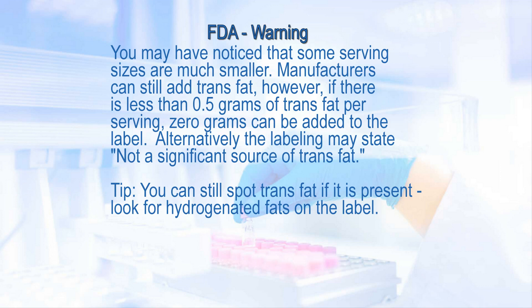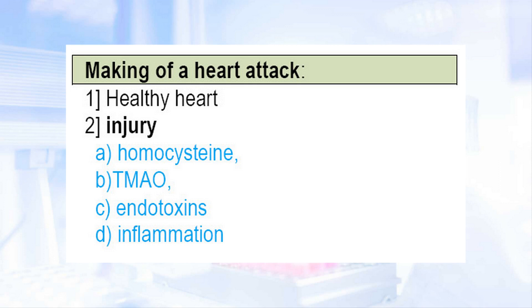Next we're going to look at the making of a heart attack. We start with a healthy heart and examine all the factors that can cause injury, such as high homocysteine levels, TMAO, endotoxins, and inflammation. Then we look at the two most common causes of inflammation: an elevated omega-6 to omega-3 ratio and oxidized cholesterol.